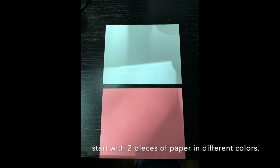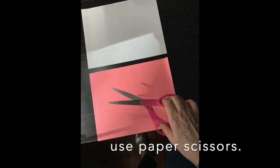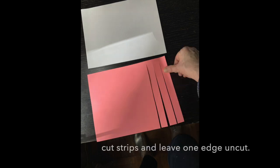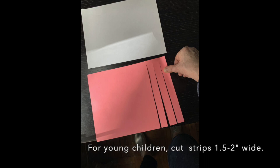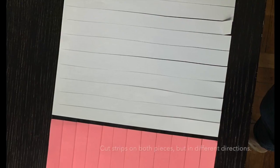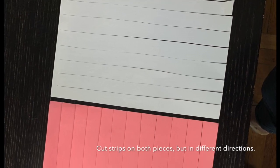Start with two pieces of paper in different colors. Use paper scissors. Cut strips, leaving one edge uncut. For young children, cut strips one and a half to two inches wide. Cut strips on both pieces but in different directions.